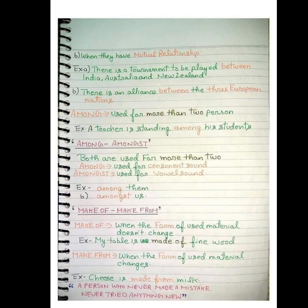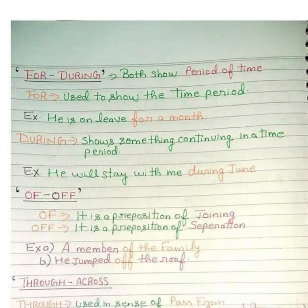Now 'for' versus 'during' — both relate to a period of time, but with a difference. 'For' shows the time period: he is on leave for a month. 'During' means 'in the course of' a time period: he will stay with me during June. We take our lunch and play games during recess — meaning throughout that time.